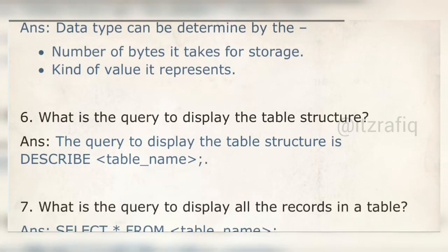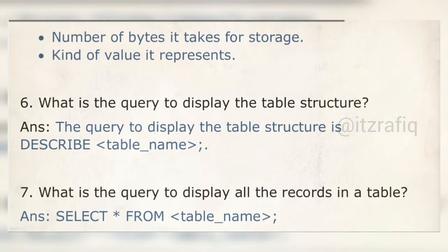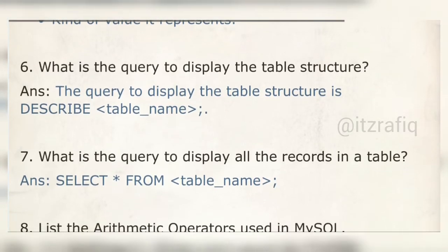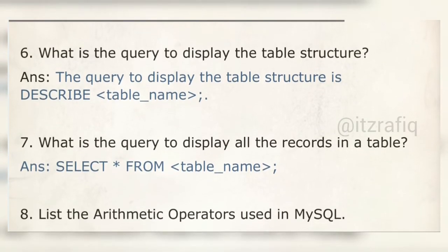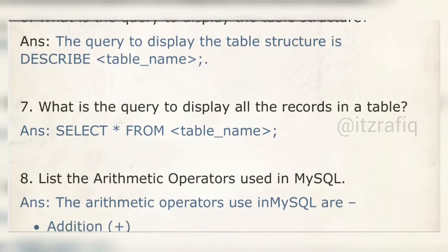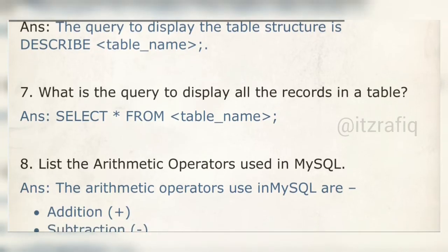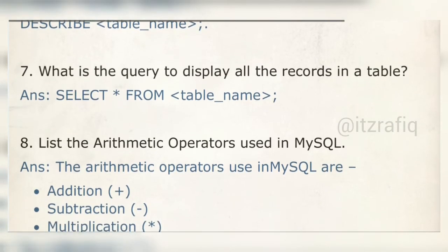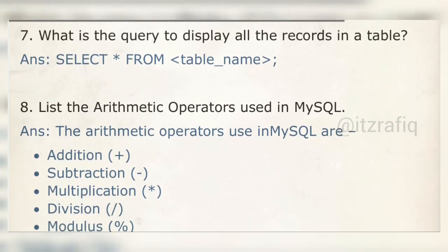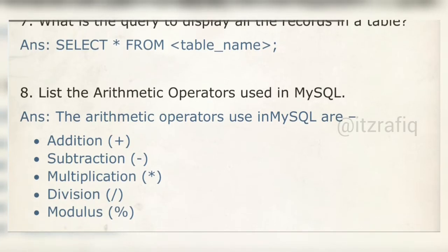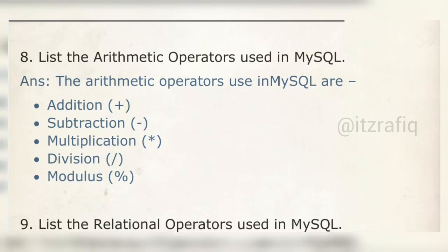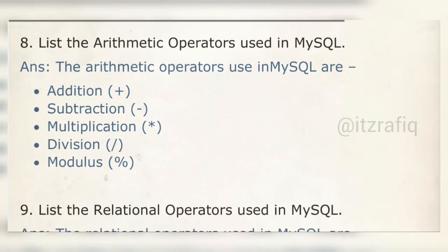What is the query to display the table structure? The query is DESCRIBE followed by the table name. For example, if the table is 'student', the query is: DESCRIBE student. What is the query to display all records in a table? It is SELECT * FROM table_name — the star means all columns are selected, giving complete information.